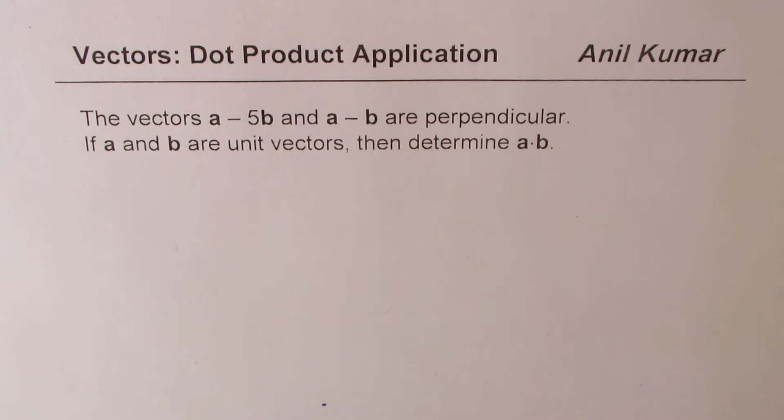The question here is, the vectors A minus 5B and A minus B are perpendicular. If A and B are unit vectors, then determine A dot B. You can always pause the video, answer the question, and then look into my suggestions.